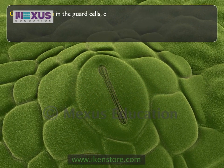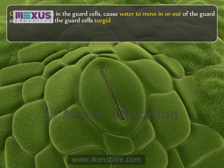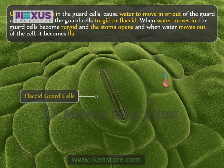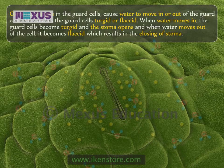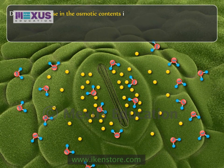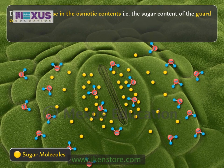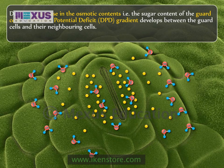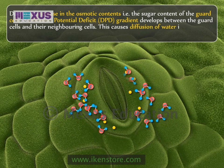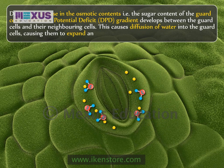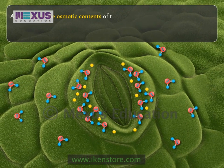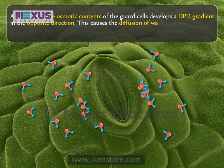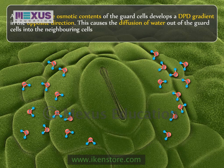Osmotic changes in the guard cells cause water to move in or out of the guard cells. When water moves in, the guard cells become turgid and the stoma opens; when water moves out of the cell, it becomes flaccid, which results in the closing of the stoma. Due to an increase in the osmotic contents — that is, the sugar content of the guard cells — a diffusion potential deficit (DPD) gradient develops between the guard cells and their neighbouring cells. This causes diffusion of water into the guard cells, causing them to expand and become more turgid. A decrease in the osmotic contents of the guard cells develops a DPD gradient in the opposite direction, causing diffusion of water out of the guard cells into the neighbouring cells, making the guard cells flaccid.